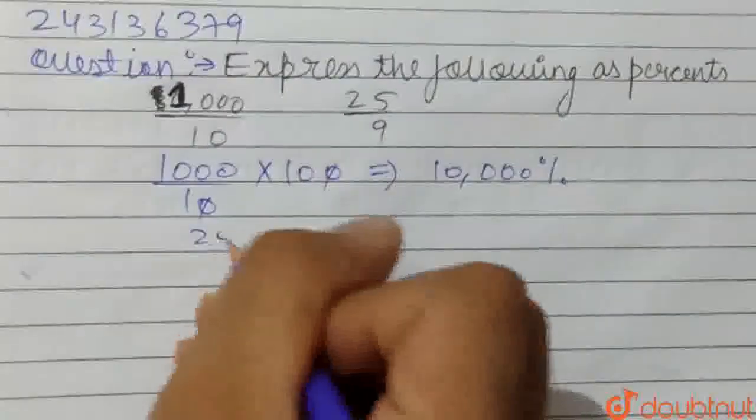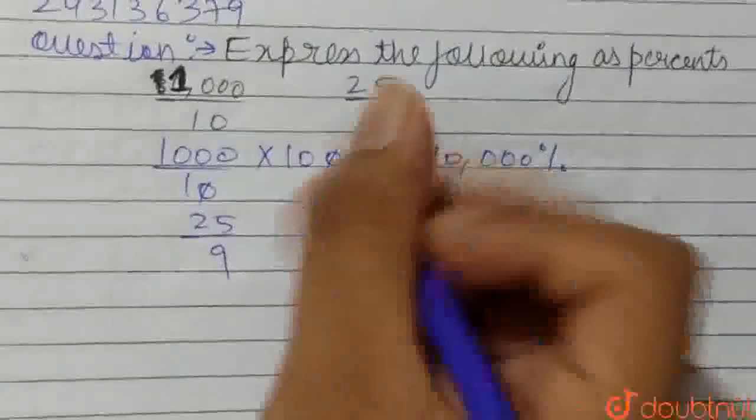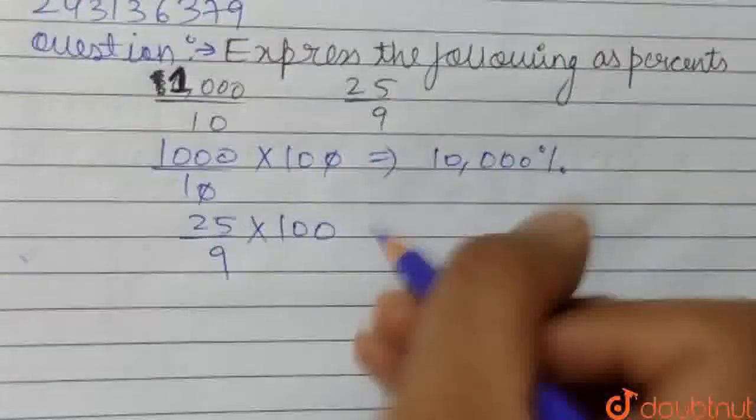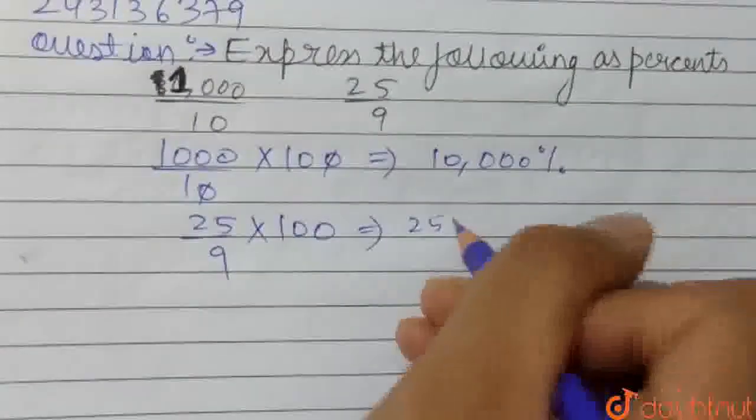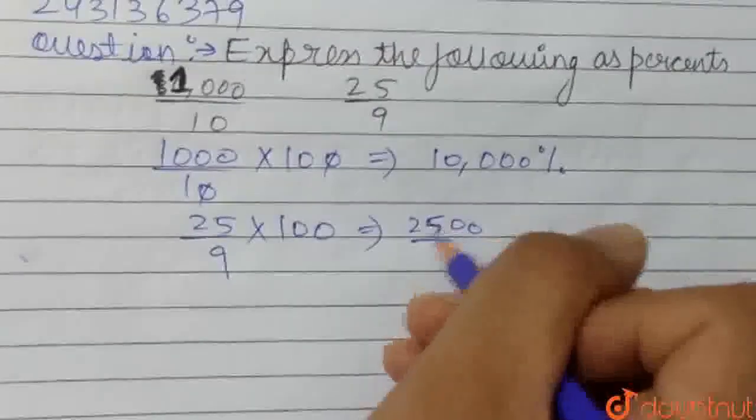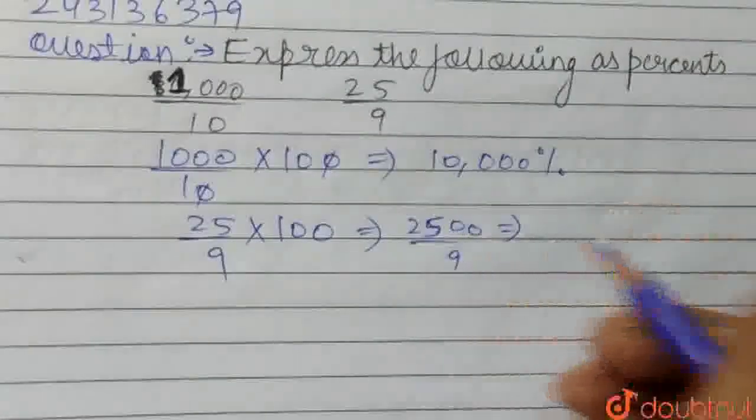Now, for 25 upon 9, again we multiply by 100. For converting into percentage, we get 2500 upon 9. So if we divide this fraction...